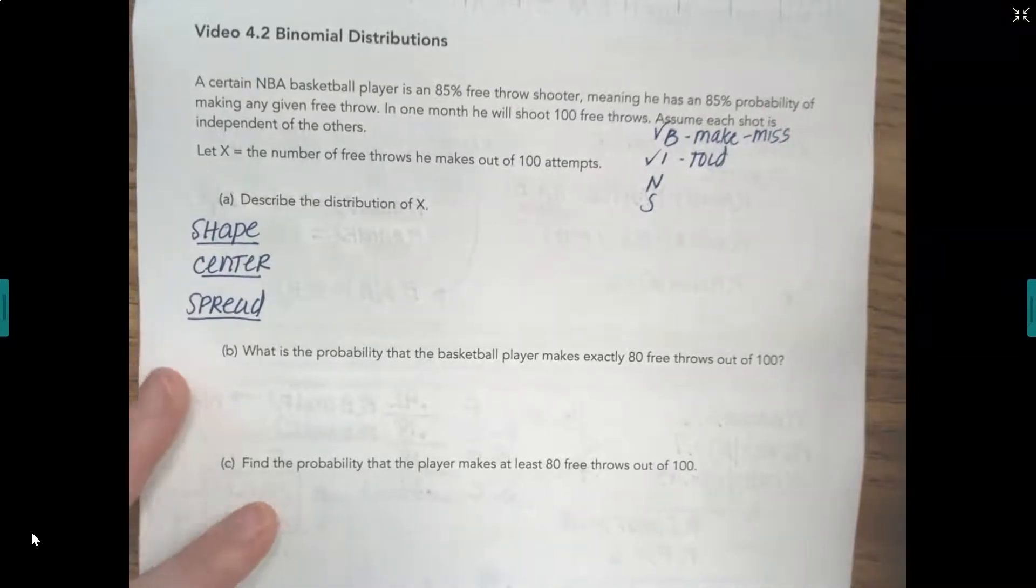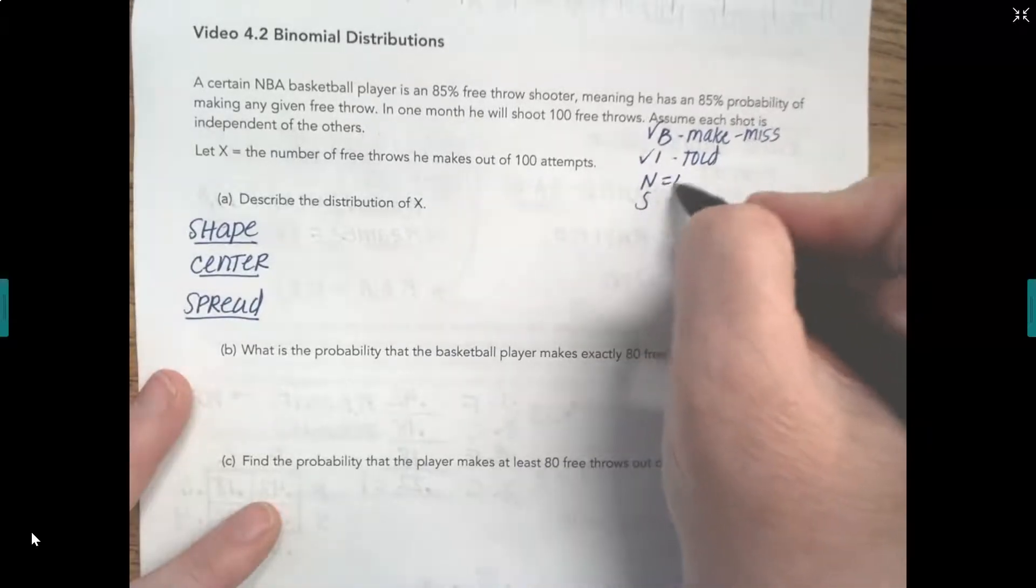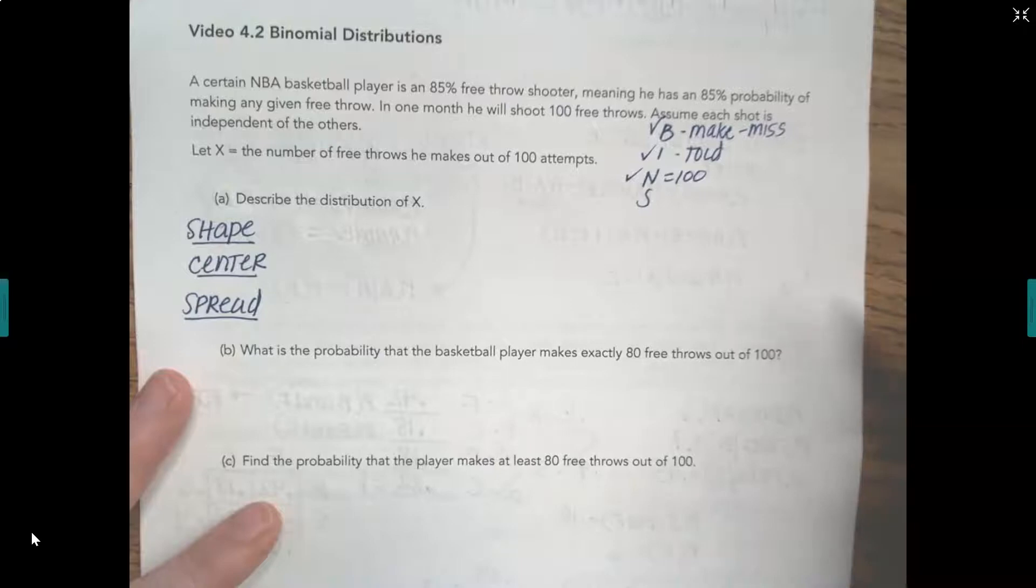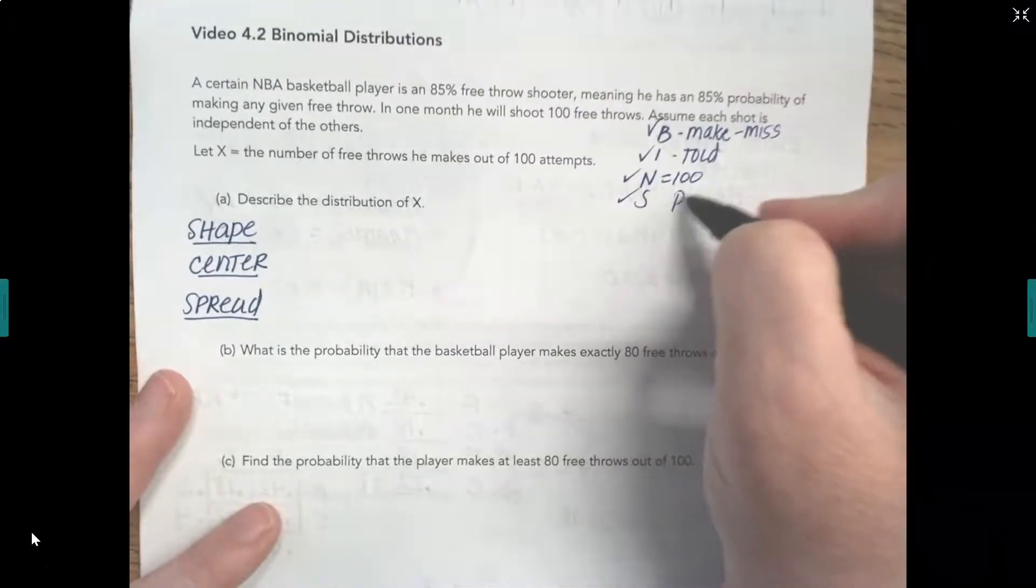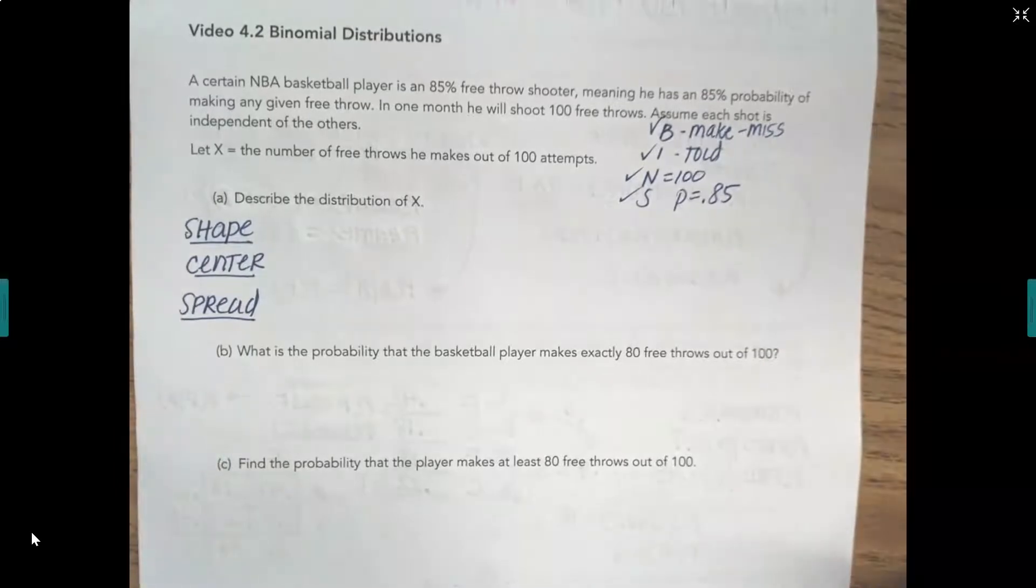N stands for a set number of trials. It says he's going to shoot it 100 times. So your N is 100. So we're good there. And S stands for the same probability of success each time. It says he's an 85% free throw shooter. So we're good there too because the probability of success is 0.85.